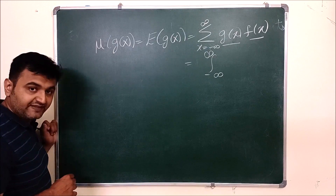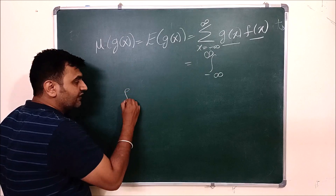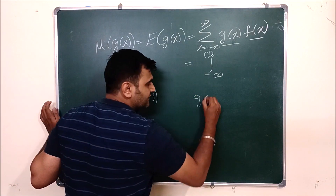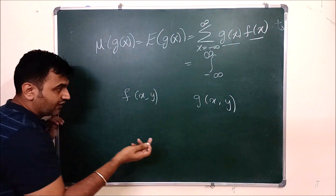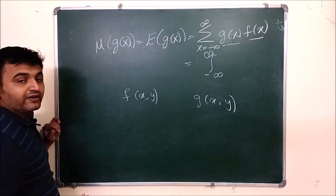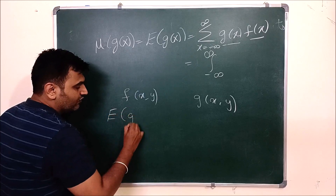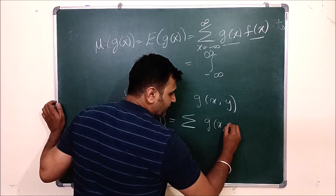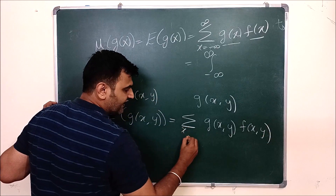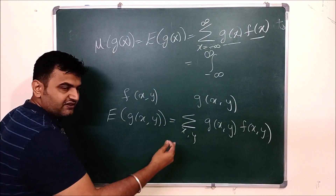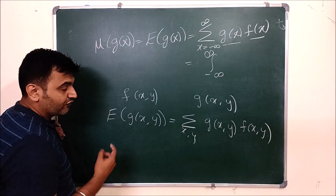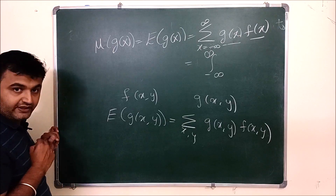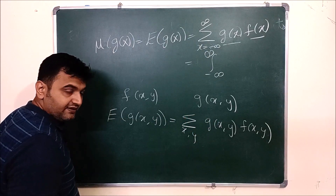The same generalizes to higher variables — when you have more than one random variable on the same sample space. If f(x,y) is your joint PMF and g(x,y) is a new random variable, then the expected value of g(X,Y) is the double summation of g(x,y)·f(x,y), summing over both x and y. For the continuous case, it becomes a double integral from minus infinity to infinity over both variables. For three variables x, y, z, the same idea extends.